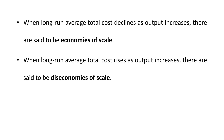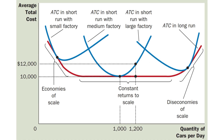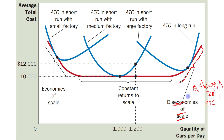When long run average total cost rises as output increases, there are said to be diseconomies of scale. So when long run average total cost rises with the increase in output, that portion is known as diseconomies of scale — meaning this portion here.